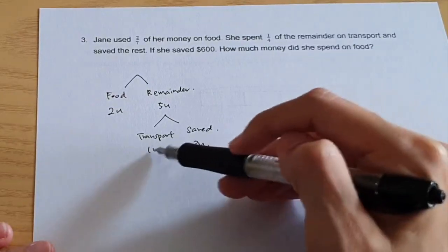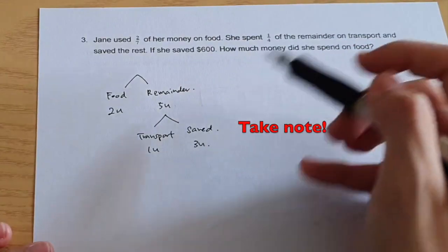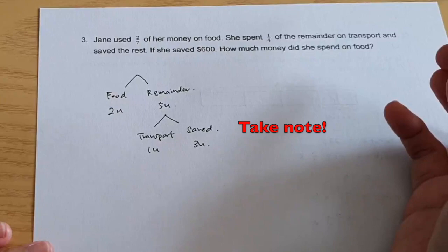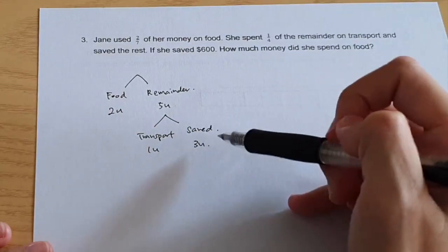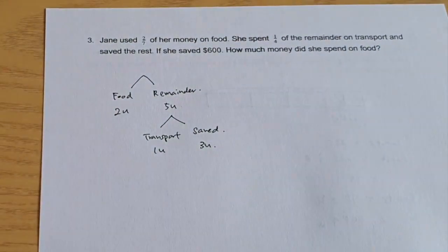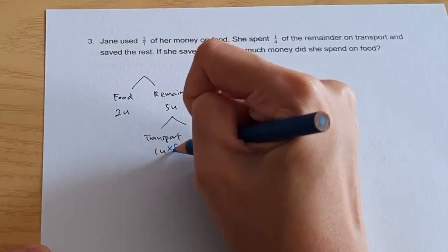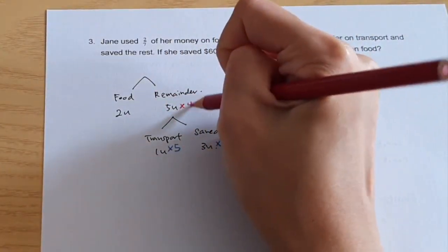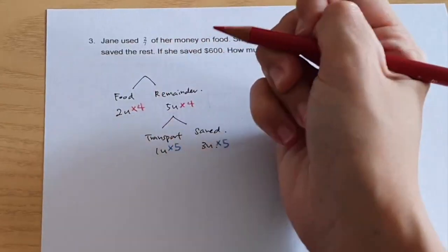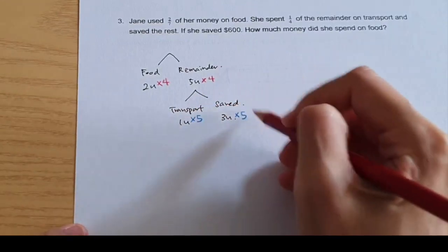So what we want to do now is to make five and four become the same number. This is a very important step. So we're thinking of common multiple of five and four, which is 20. So four, you will times five. And for the five, you will times four. And don't forget the times four here as well. So now we made this become 20 units. And the sum of this also 20 units.